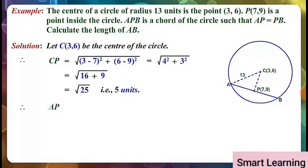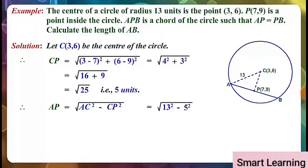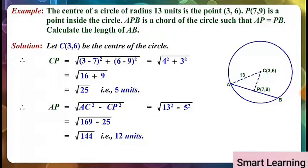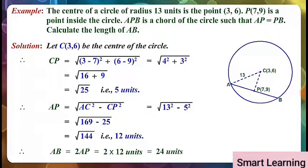Therefore AP is equal to under root of AC squared minus CP squared, equal to under root of 13 squared minus 5 squared, equal to under root of 169 minus 25, equal to under root 144, that is 12 units. Therefore AB is equal to twice AP, equal to 2 into 12 units, equal to 24 units.